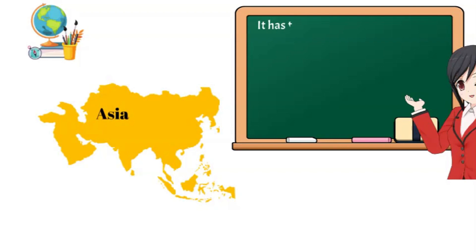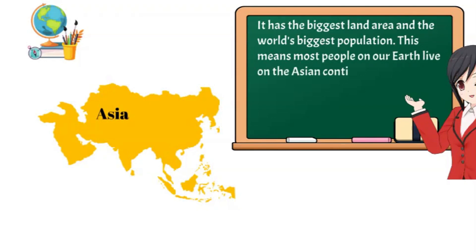Now, let's take a closer look at each continent. Number one: Asia. Asia is the largest continent in size. It has the biggest land area and the world's biggest population. This means most people on our earth live on the Asian continent.